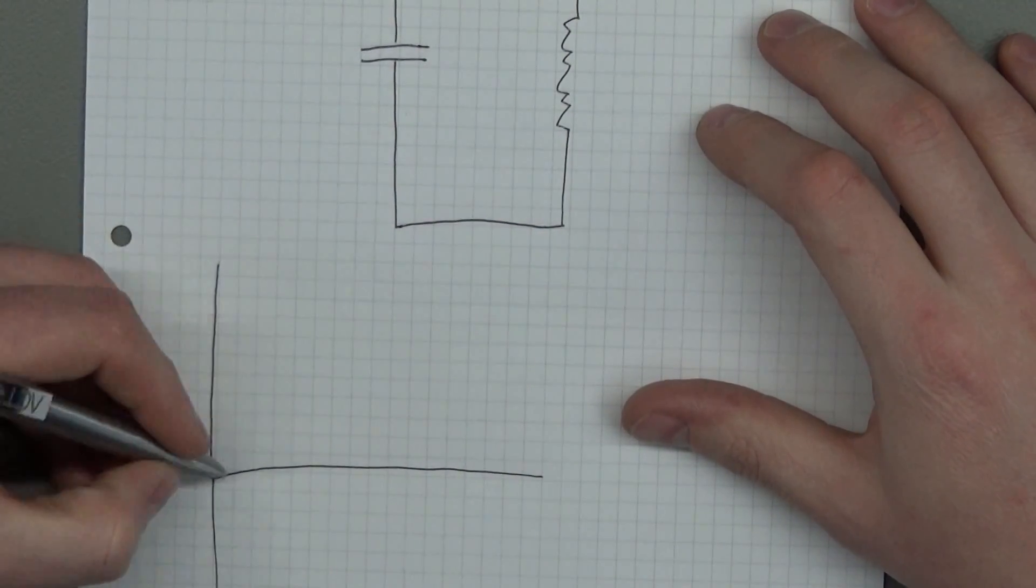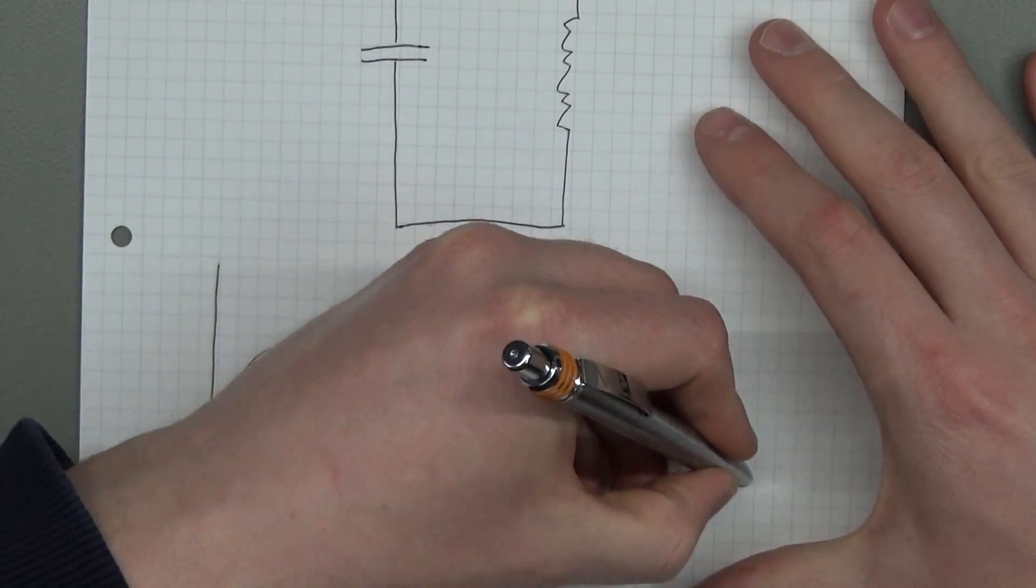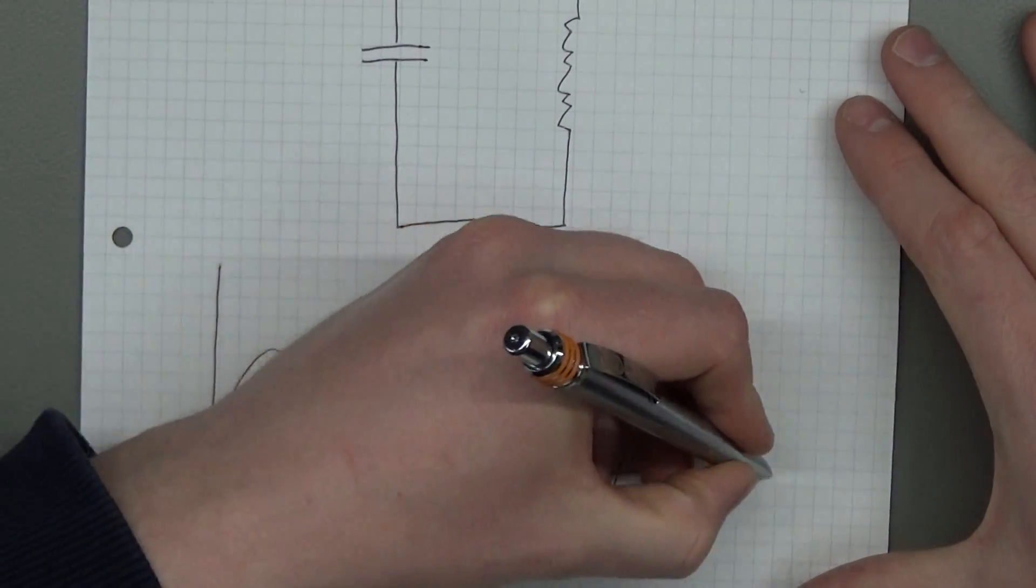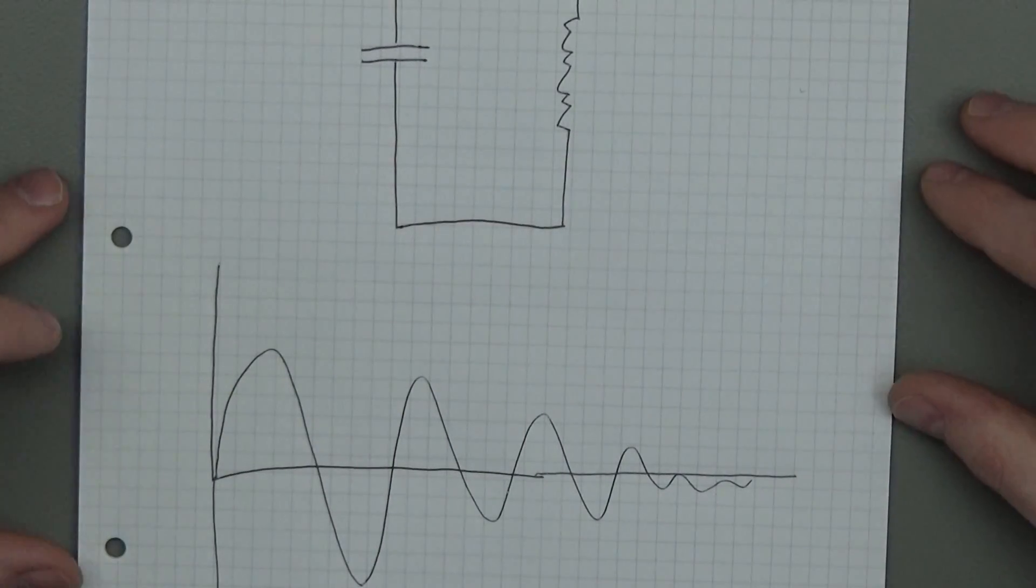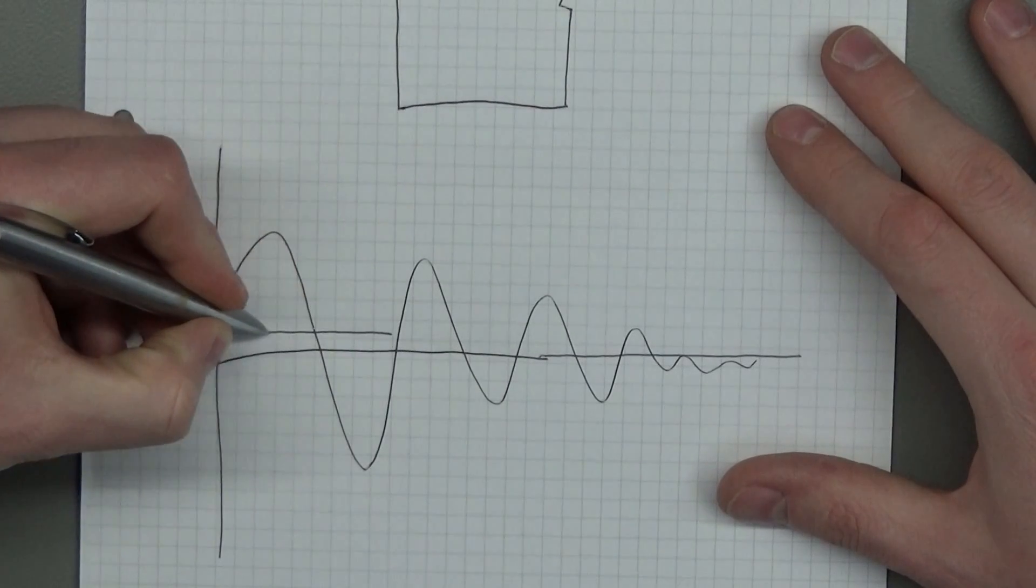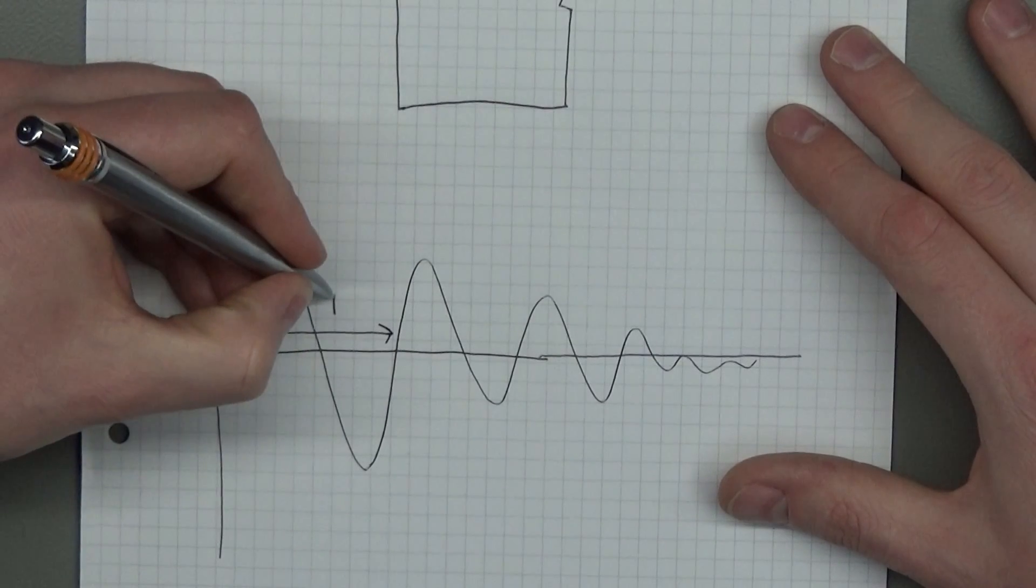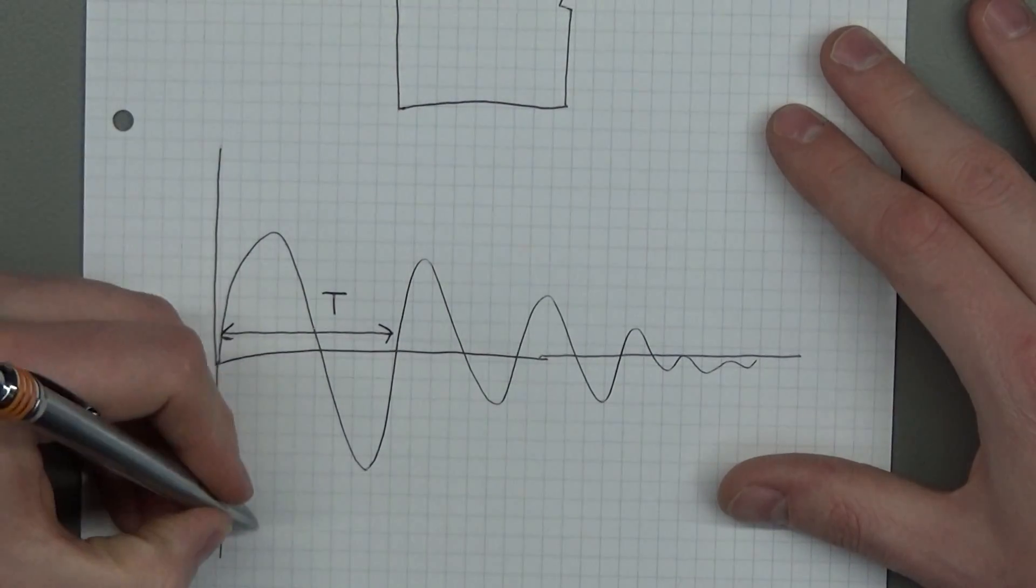This is called resonance frequency T, and the frequency is 1 over T, which equals 1 over 2π multiplied by the square root of L times C.